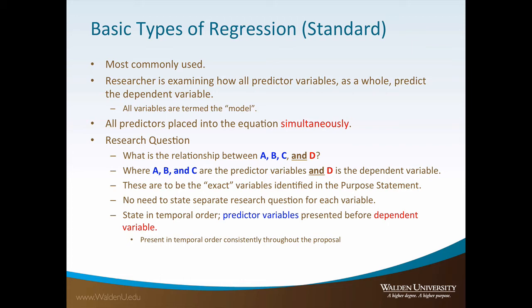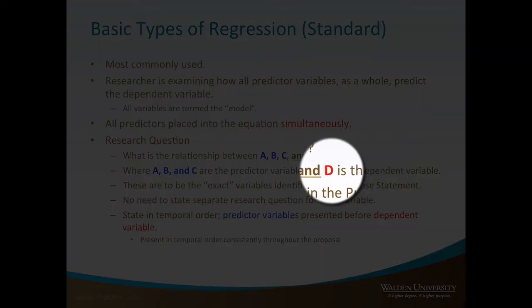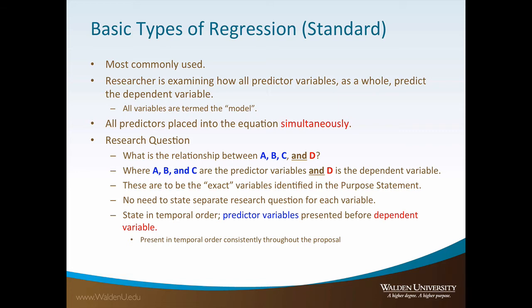Let's look at an example research question appropriate for standard multiple linear regression. We will use the color blue to depict the independent variables and the color red to depict the dependent variable. A research question can be stated as follows: What is the relationship between A, B, C, and D? Where A, B, and C are the predictor or independent variables and D is the dependent variable. These are to be the exact variables identified in the purpose statement. For quantitative studies, the independent and dependent variables must be identified. There is no need to restate separate research questions for each variable.